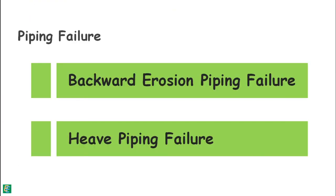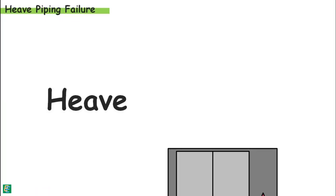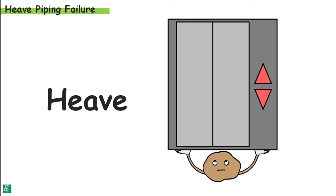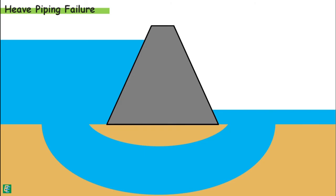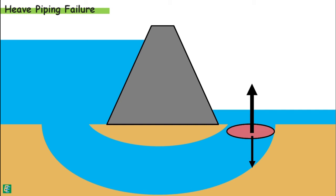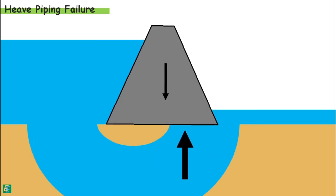The second type is heave piping failure. 'Heave' means to lift or raise something with great force. This kind of failure may also occur on the downstream side of a hydraulic structure when the water is coming out vertically upwards. It occurs when the upward seepage force acting on particles over an area exceeds the downward force due to the submerged weight of the soil above that area. This condition destabilizes the soil, and if the uplift force exceeds the weight of the dam, it may destabilize the whole structure.